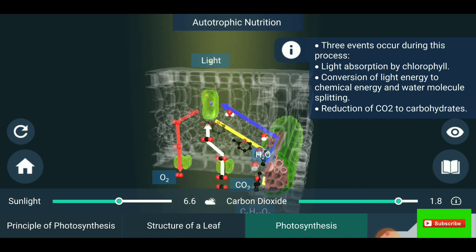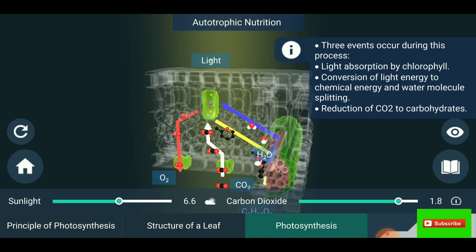Three events occur during this process: light absorption by chlorophyll, conversion of light energy to chemical energy and water molecule splitting, reduction of carbon dioxide to carbohydrates.